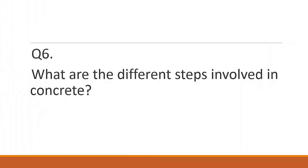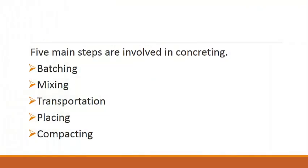The sixth question is: what are the different steps involved in concreting? The main steps are batching, mixing, transportation, placing, and compacting. Batching means measuring the amount of different materials needed to make a concrete mix. Mixing refers to properly combining these ingredients. Transportation means moving concrete from the mixing place to where it is needed. Placing refers to the actual usage of concrete, and compacting — done by a steel rod or vibrator — ensures a dense, solid concrete.